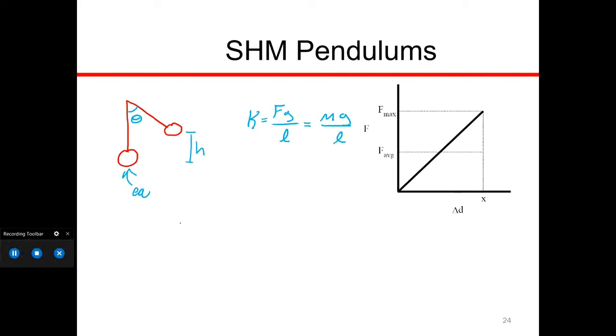If we take the spring equation for period, T = 2π√(m/k), and substitute our k here, we end up with T = 2π√(l/g). The masses cancel out and we're left with the square root of length divided by gravity. This is our equation to determine the period of a pendulum.